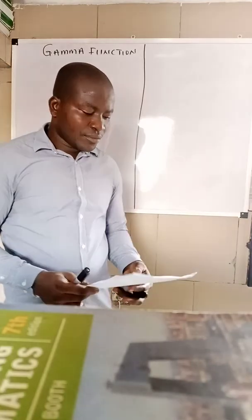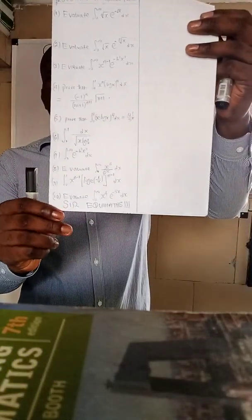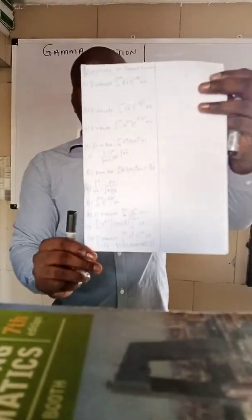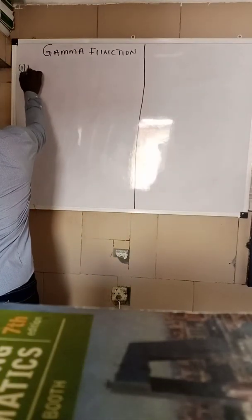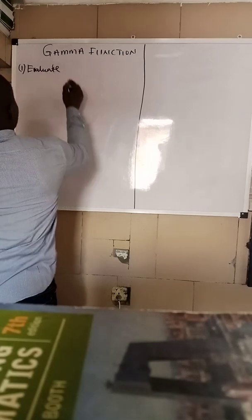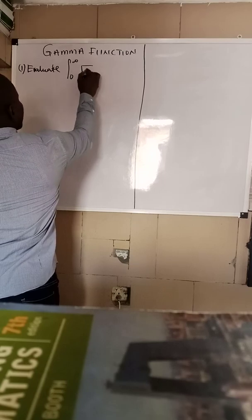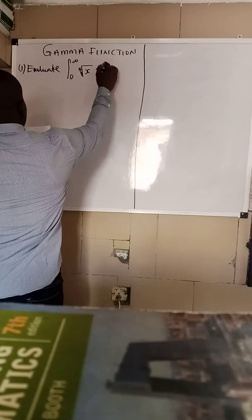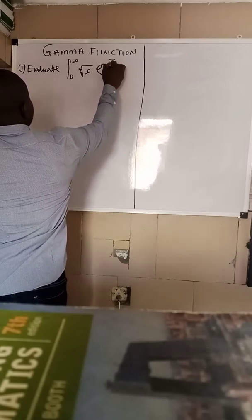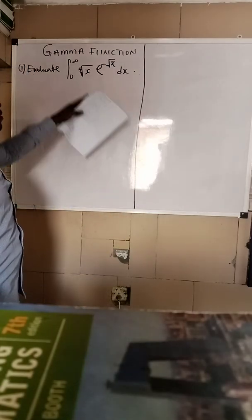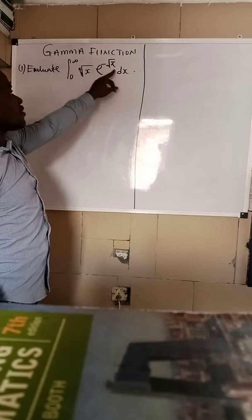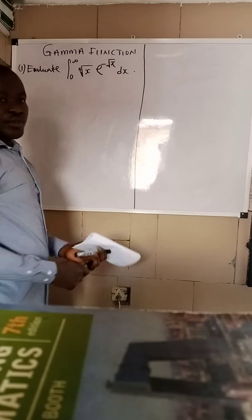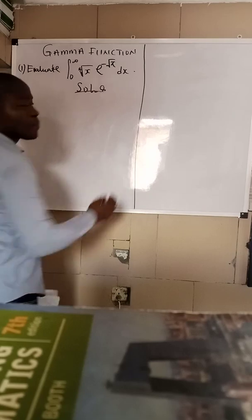Welcome back to today's class. We'll be looking at some questions on the gamma function — about 10 questions. We are going to solve all these questions today. The first question asks us to evaluate the integral from zero to infinity of the fourth root of x times exponential minus root x dx.